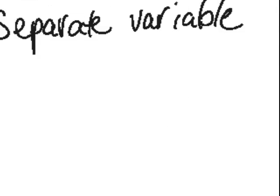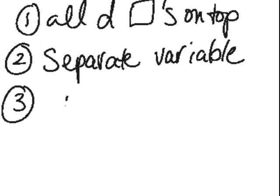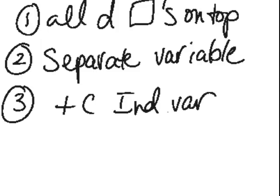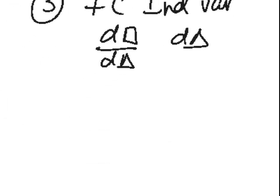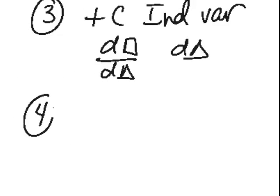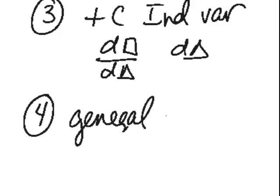You only get a plus C on the independent variable side, and that's the one that's in the denominator of the d-whatever. So in this case it would be the triangle. And then when you solve your equation you get what's called a general solution, and that's with a plus C.